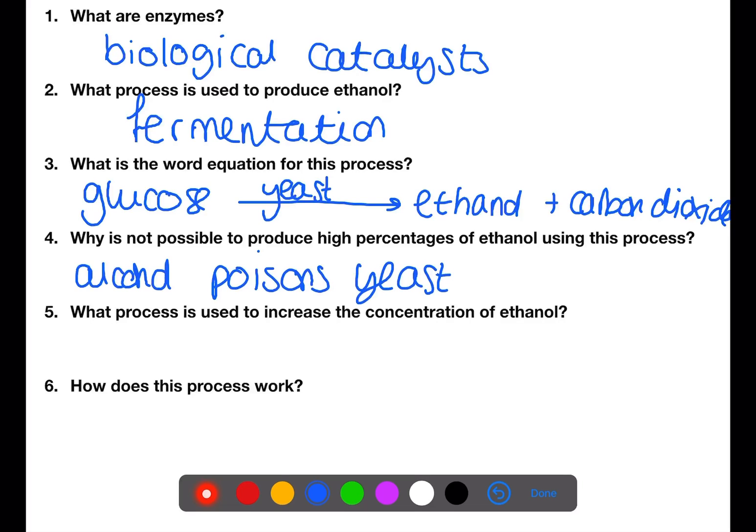The process used to increase the concentration of ethanol is called distillation. This process works by heating a mixture which has different boiling points.